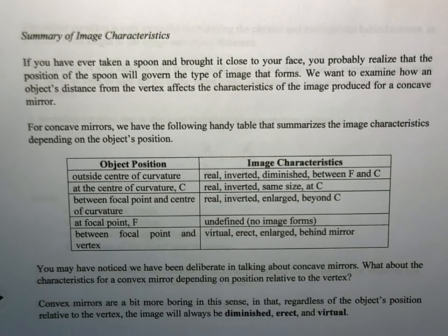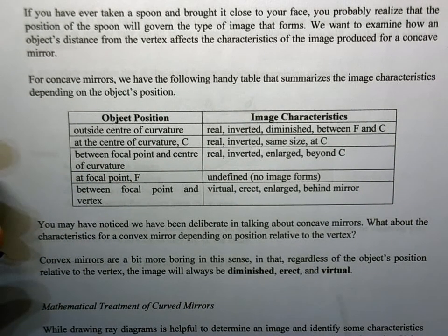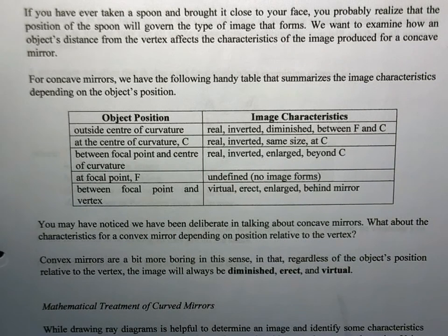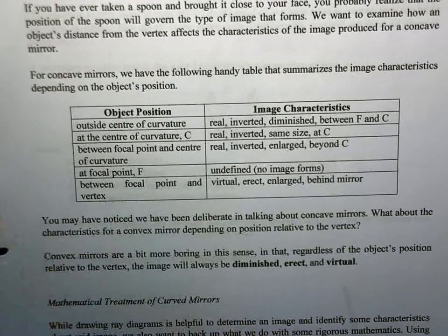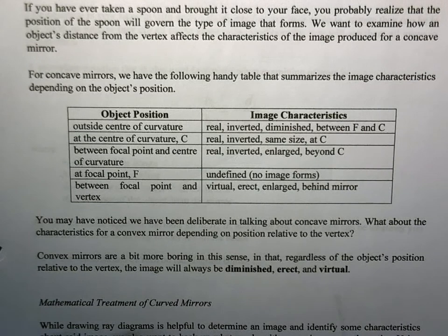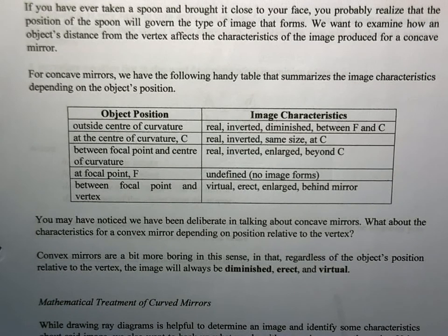So just the last thing before we start getting into the mathematics, we just have kind of a table here. So for concave mirrors, depending on where we position the object—so if it's past the center of curvature, if it's at the center of curvature, through the focal point in the center of curvature, that's at the focal point, or that special case if it's between the focal point and the vertex—we can distinguish all of it. We can have all the different types of characteristics. You don't need to know this. You can get all this information from a properly drawn ray diagram. The only special case is if you place your object at the focal point. When you draw your rays, they will always be parallel to one another. You will not have a convergence of those rays, so you will not have an image formed. So that's kind of the special case.